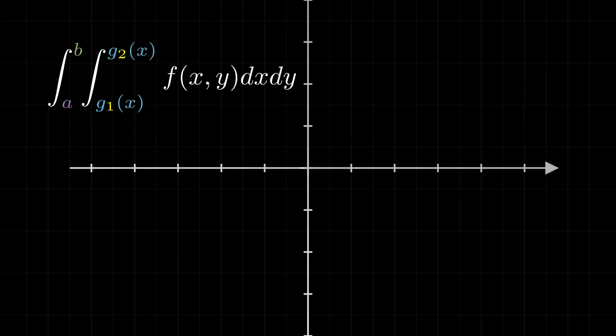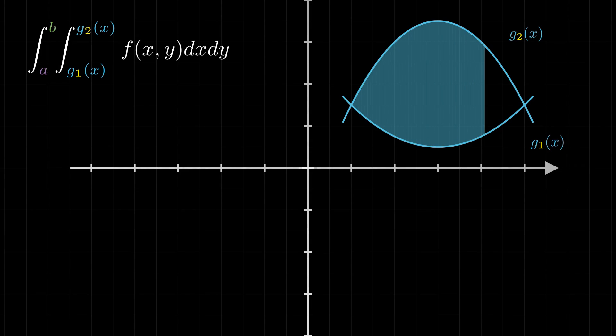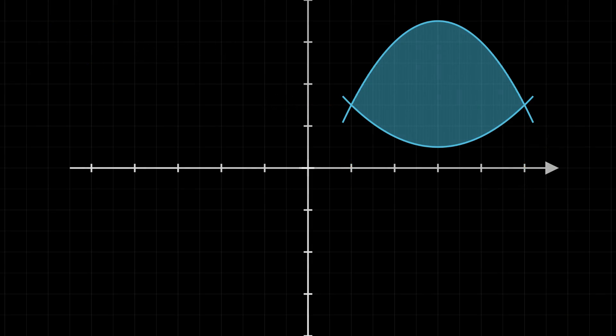Let's complicate the things a little more. Imagine now a region between two functions of one variable, g1 of x and g2 of x. In a figure like this, while the x-range can be freely chosen, the y-range will depend on the x-coordinate we are in, because of the two functions that surround the figure. How does this affect our search for volumes?